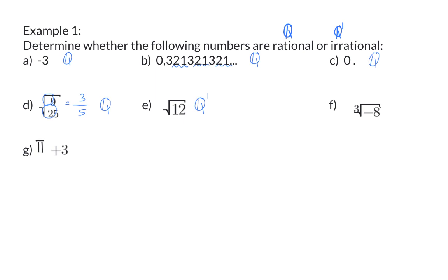In F, we have a minus inside a root. But because it's an uneven or odd root, this is still a real number. The cube root of minus 8 is minus 2 and therefore this is a rational number.